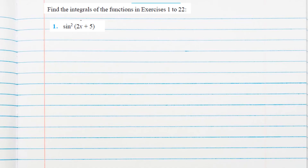We find the integral of the function in exercises 1 to 22. The first question is sin squared of (2x + 5). Let the integral I = ∫sin²(2x + 5) dx.